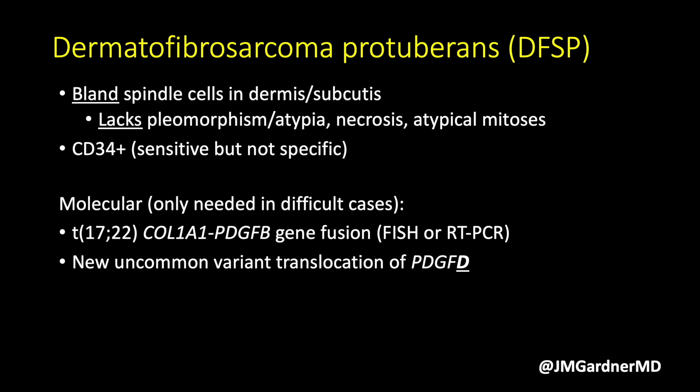Histologically, DFSP shows bland spindle cells often with a storiform pattern. Despite being a sarcoma, you almost never see significant pleomorphism in DFSP, and that's because it's a translocation sarcoma. Most translocation-associated spindle cell tumors have uniform, monotonous nuclei and lack pleomorphism — an important take-home pearl I learned from my mentor Dr. Mark Edgar.